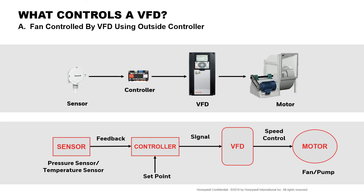VFDs are controlled by sensors — temperature, pressure, or CO2 sensors. The sensor is either wired through a controller or straight to the VFD. In this example, a duct sensor is wired to a DDC controller. The controller is commanding the VFD's speed. Most VFDs operate as part of a DDC system. In these cases, the DDC system provides the smarts.